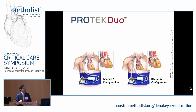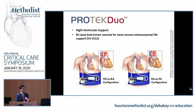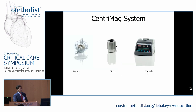The Protek Duo uses the same pump platform but with a bicaval dual-lumen cannula placed in the right internal jugular vein, primarily for right ventricular support. It has two lumens — the inlet sits in the right atrium and the outlet sits in the pulmonary artery — taking blood from the right atrium and delivering it to the pulmonary artery. An oxygenator can also be attached, allowing it to function as a veno-venous ECMO.